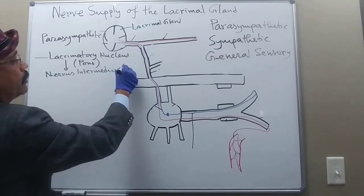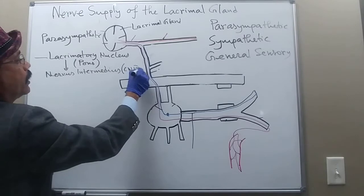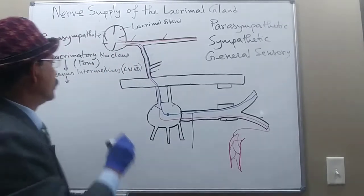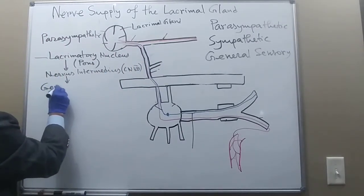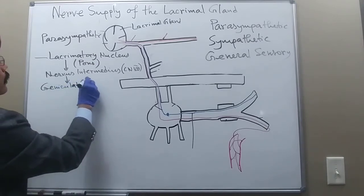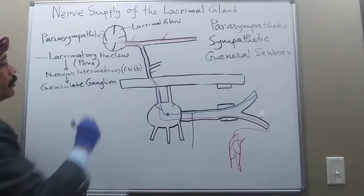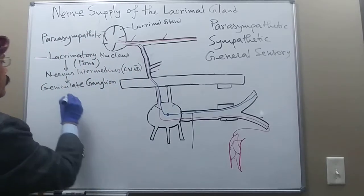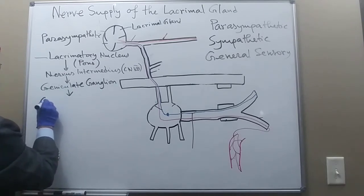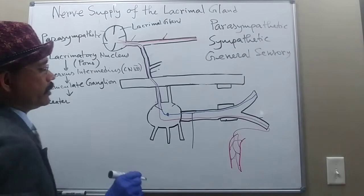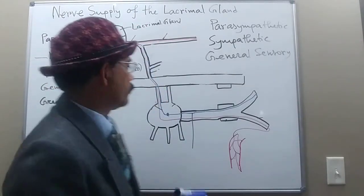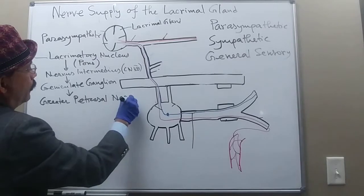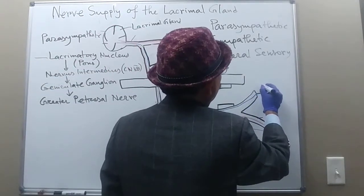The nervus intermedius is a part of cranial nerve number seven, the facial nerve. From the nervus intermedius, we then go to the geniculate ganglion, which is also a part of the seventh cranial nerve or facial nerve. From the geniculate ganglion, we then go to the greater petrosal nerve.